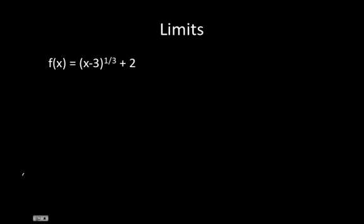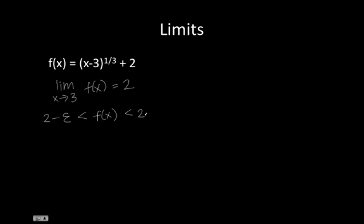Let's say we weren't given an epsilon value — you could still find a greatest value of Delta in terms of epsilon. As we knew from the previous part of this problem, the limit as X approaches 3 of f(X) is equal to 2. So 2 minus epsilon must be less than f(X), and f(X) must also be less than 2 plus epsilon.